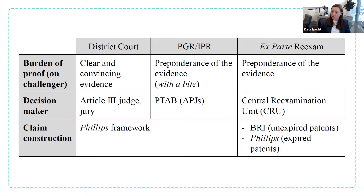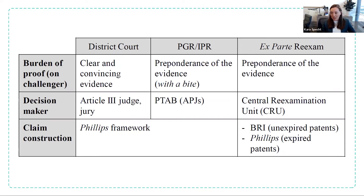Claim construction is another big difference across these proceedings. In November 2019, the PTAB changed their standard of construction from broadest reasonable interpretation to the Phillips framework, aligning with district court standards — so you now get the ordinary and customary, or plain and ordinary meaning, in both district court and IPR/PGR. For ex parte reexamination, you still get broadest reasonable interpretation, so long as the patent is unexpired and won't expire during the proceeding. If you're filing two days before expiration, you'll be right back into the Phillips standard.